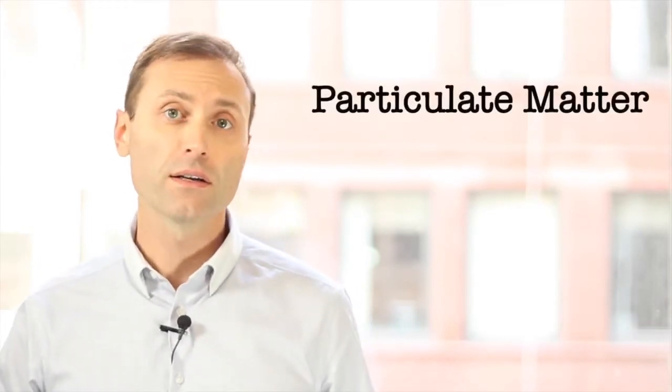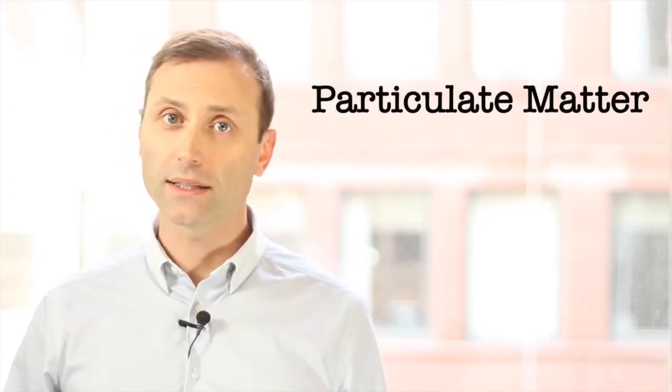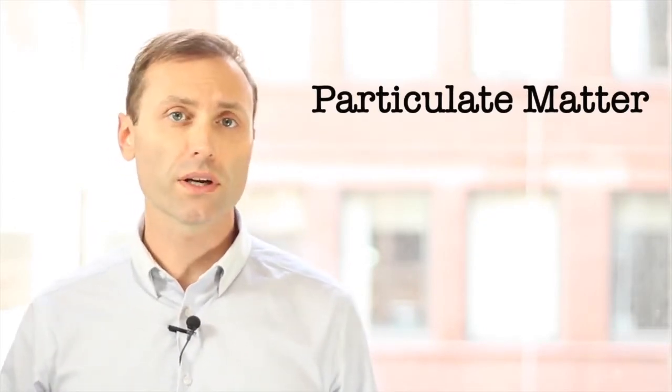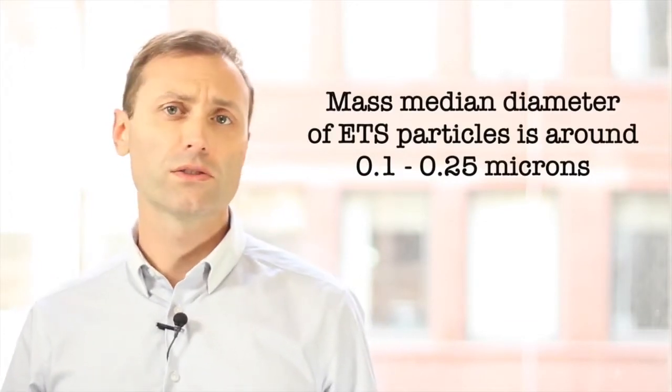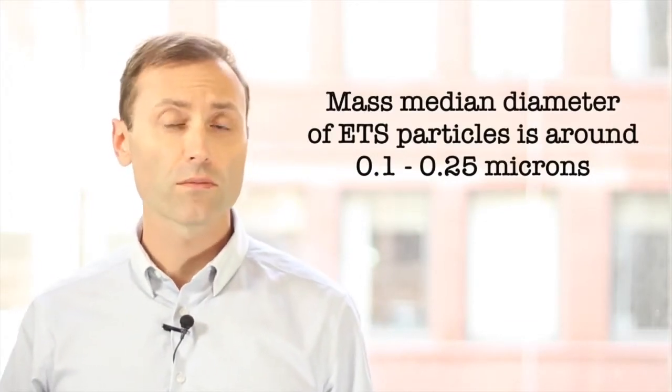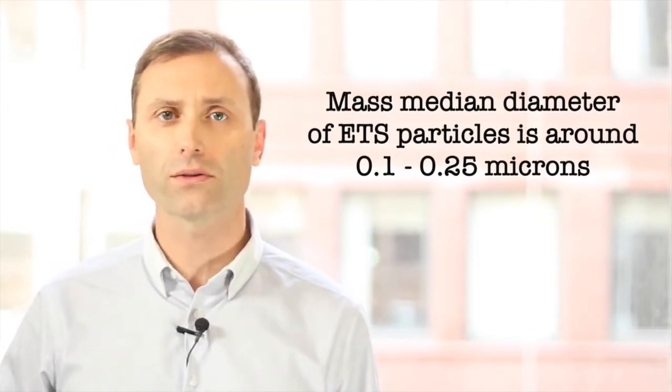The most commonly used markers are particulate matter and nicotine. Particles have many sources beyond ETS, so they can only loosely be used as a surrogate. There's no way of only counting those particles that were generated by ETS. The mass mean diameter of ETS particles is around 0.1 to 0.25 microns, so particle counters should be selected that can detect those fine particles.